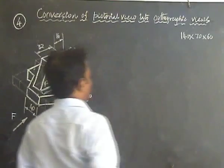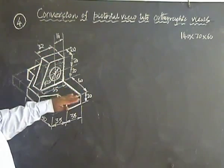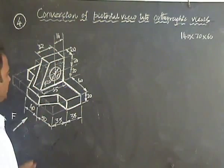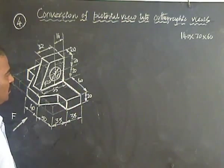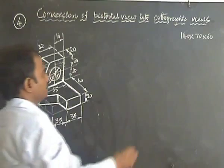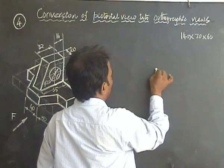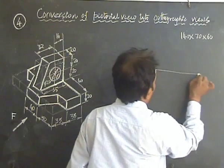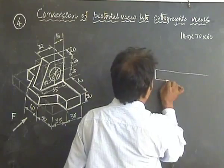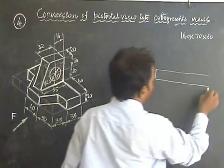We start with the front view. Forget about the top portion. Assume that there is only one block, its height is 30. So make that rectangle, just 30 mm height and 140 mm length rectangle should be drawn first. Draw this rectangle.